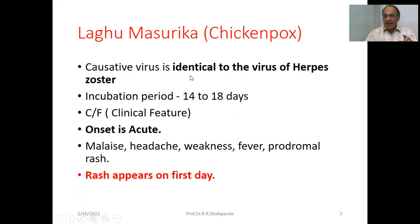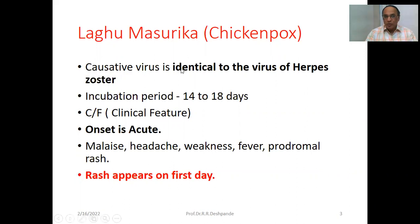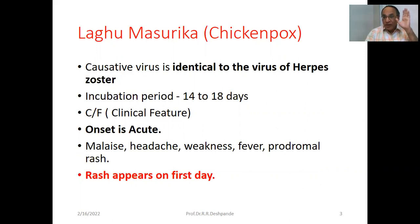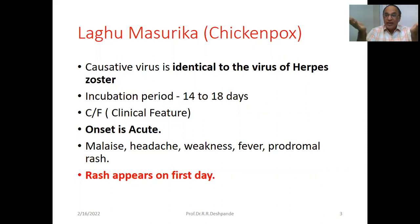The varicella virus is identical to the virus of herpes zoster. This is very important because herpes zoster is a very complicated and serious acute disease, giving burning sensation and typical vesicles on the skin. The incubation period is 14 to 18 days. If the child comes with chicken pox, you will have to inquire whether the child was in contact with a similar patient in the last 15 days. Contact may be before 15 days and symptoms appear after 15 days — that is the incubation period.